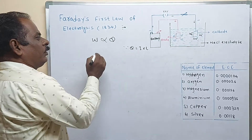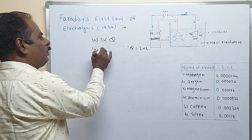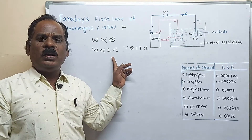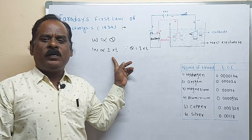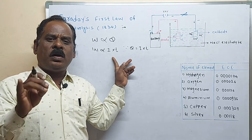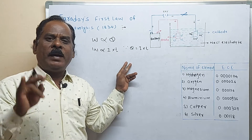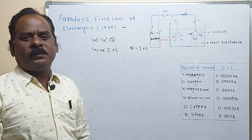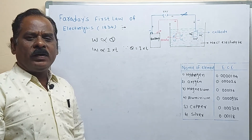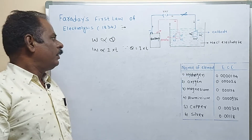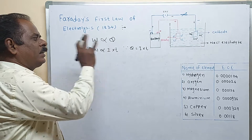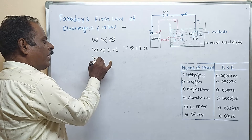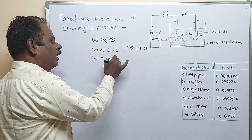Substituting the value of Q in this equation, W is directly proportional to I × T. What is I here? I is the current in ampere. Ampere of current means the quantity of electricity obtained by passing one Coulomb of electricity for one second is called one ampere of current. Here I is the current in ampere and T is the time in seconds. Removing the proportionality by taking the constant factor: W = Z × I × T.